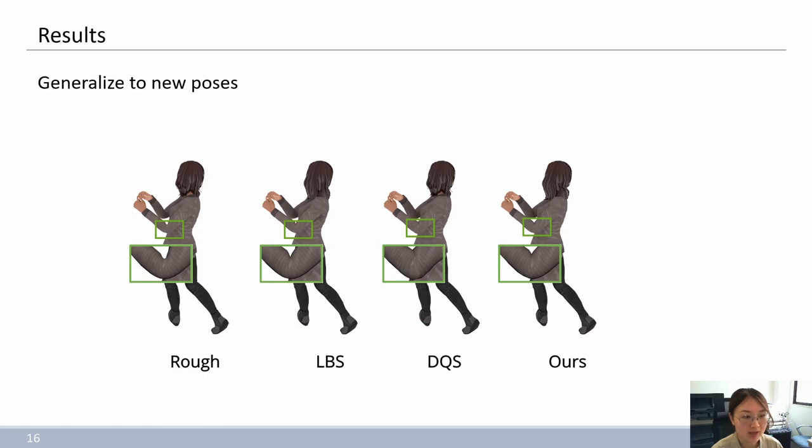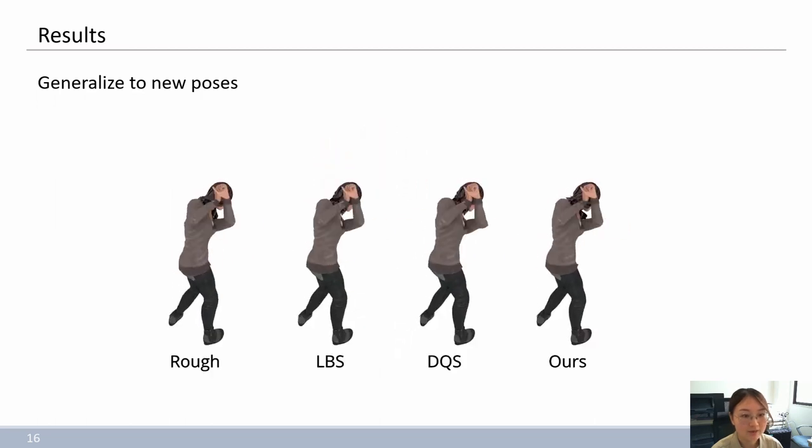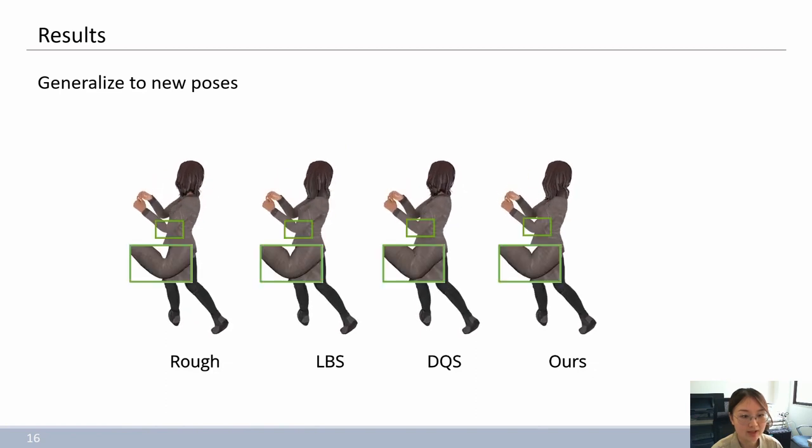LBS, DQS, and our method. Since the skinning weights are automatically generated without modification, rough linear-based deformation has significant artifacts. The deformation of LBS and DQS have improved this problem to a certain extent due to manual refinement, but visible volume loss and joint bulging still exist.